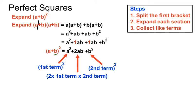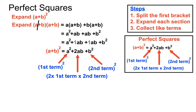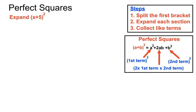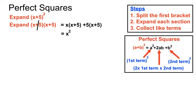We'll see each of the following examples in the long form and using the shortcut general rule for perfect squares. Let's have a look at an example: x plus 5 is being squared, so it's x plus 5 times x plus 5. The long version: we split the bracket and expand to get x squared plus 5x plus another 5x. There are like terms in the middle — 5x and 5x — which we can join together.